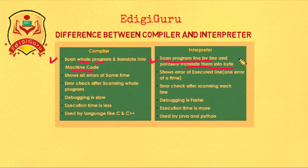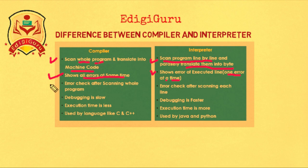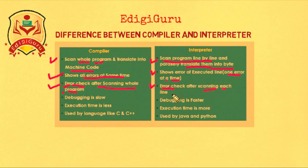The next point says that in case of a compiler, it shows all errors at the same time, whereas the interpreter shows the error of the executed line — one error at a time. The third point says that error checking in case of a compiler happens after scanning the whole program, whereas in case of an interpreter, error checking happens after scanning each line.